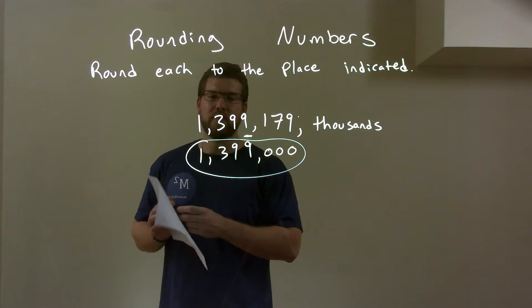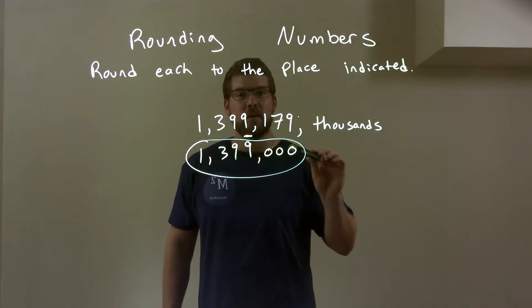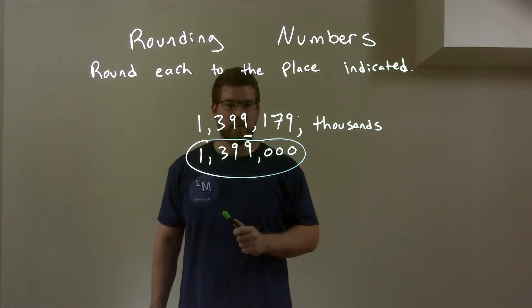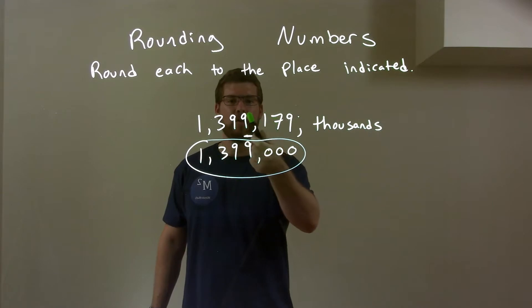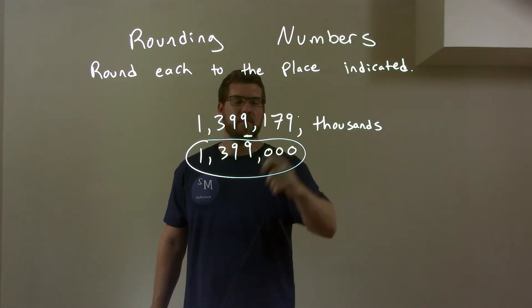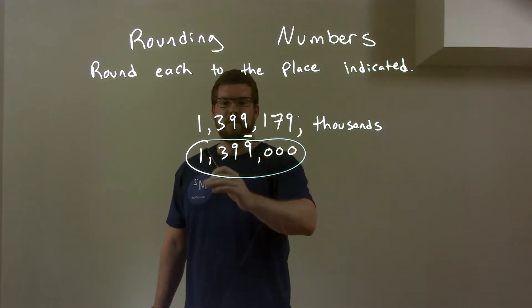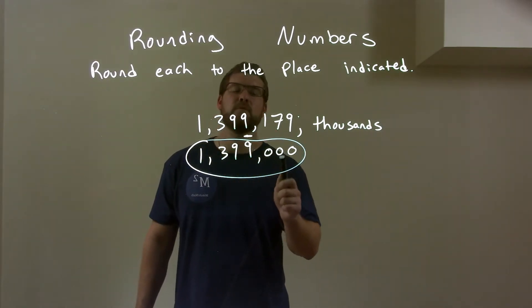So quick recap, we're given 1,399,179 and we're rounding to the thousands, the nearest thousands. The thousands I indicated was this 9 right here. Look to the right, that 1 there causes the 9 to round down. So we keep it a 9, the rest on the right become a 0 and then everything else left comes down. And our final rounded answer is 1,399,000.